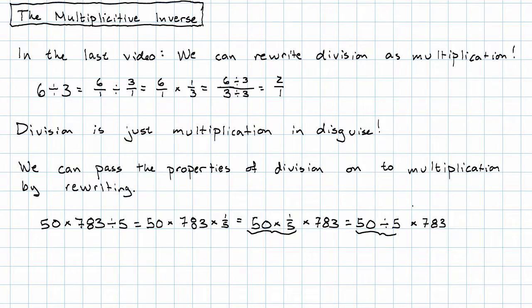So 50 divided by five, that's easy, that's 10. And multiplying by 10 is also easy. And because we can rewrite division as multiplication, we can extend those nice properties that multiplication has to division.